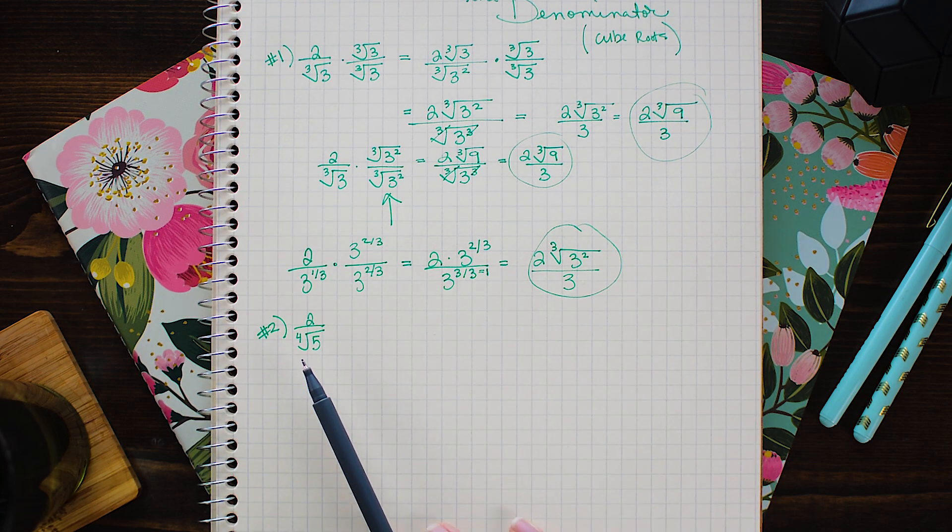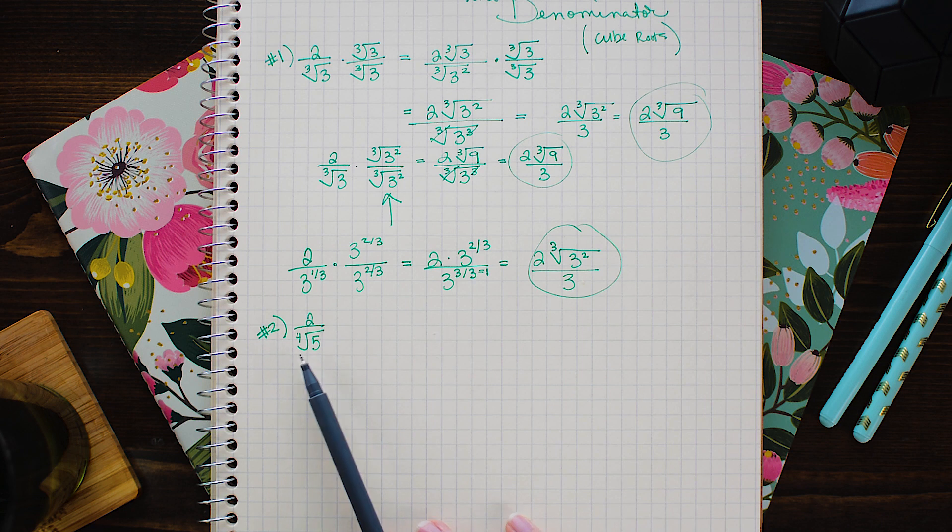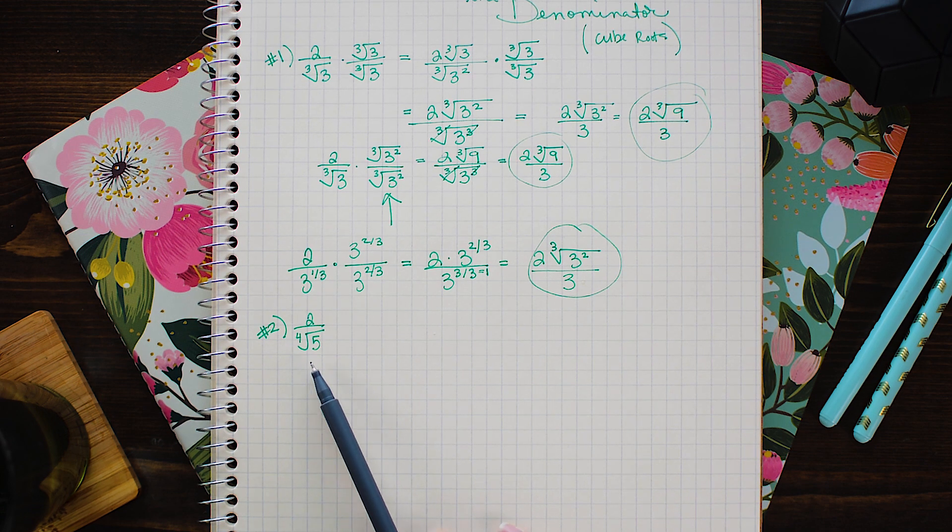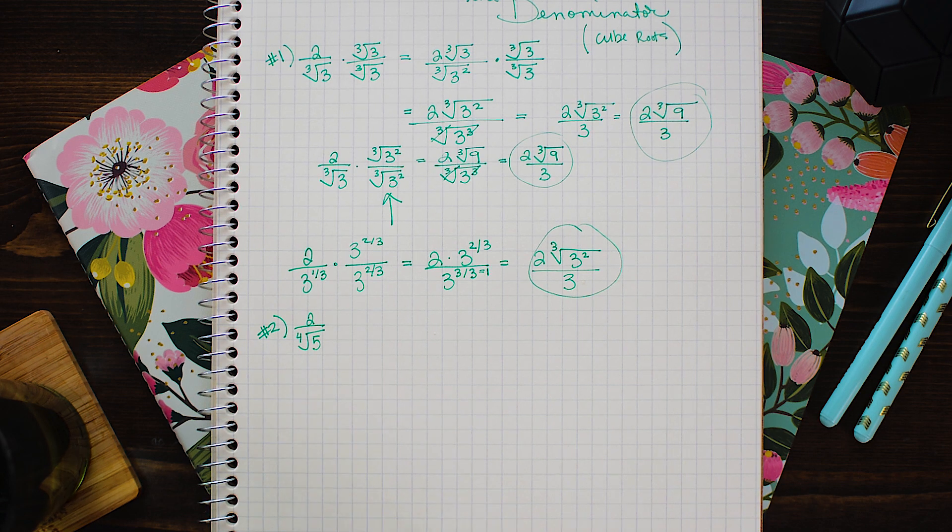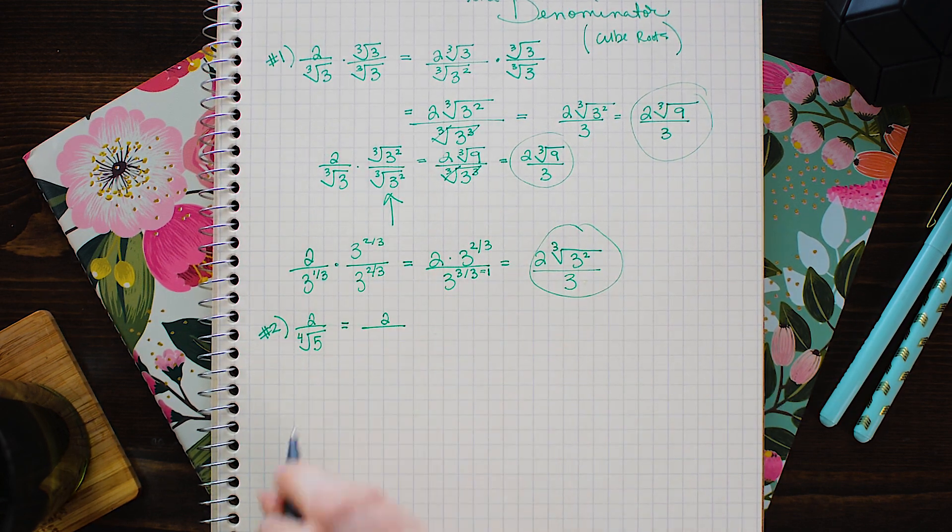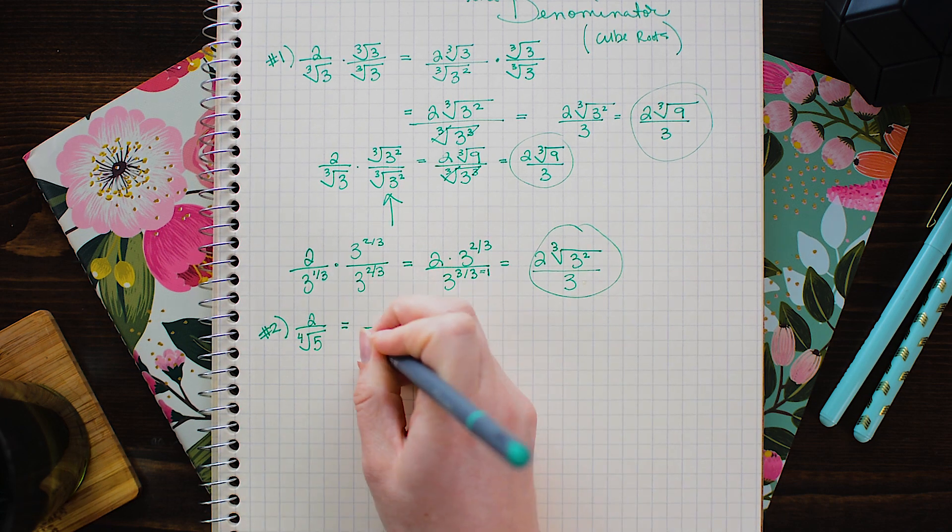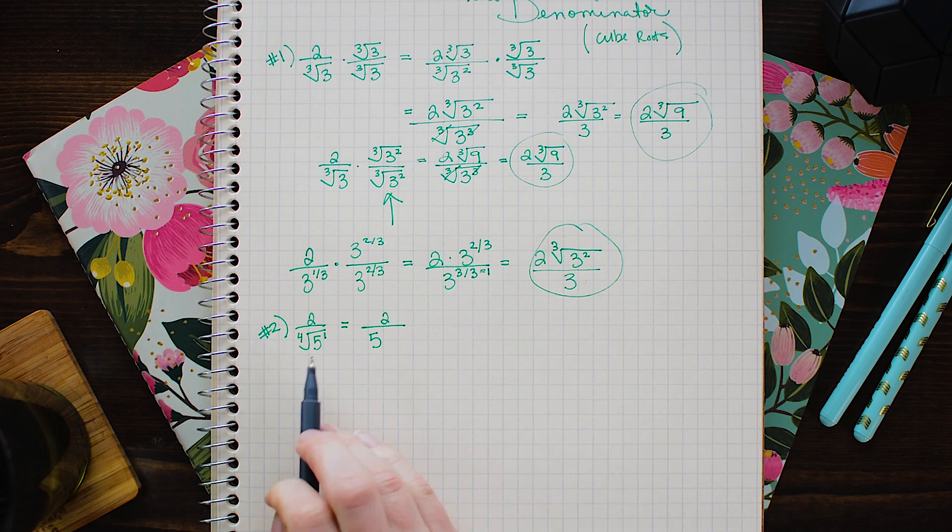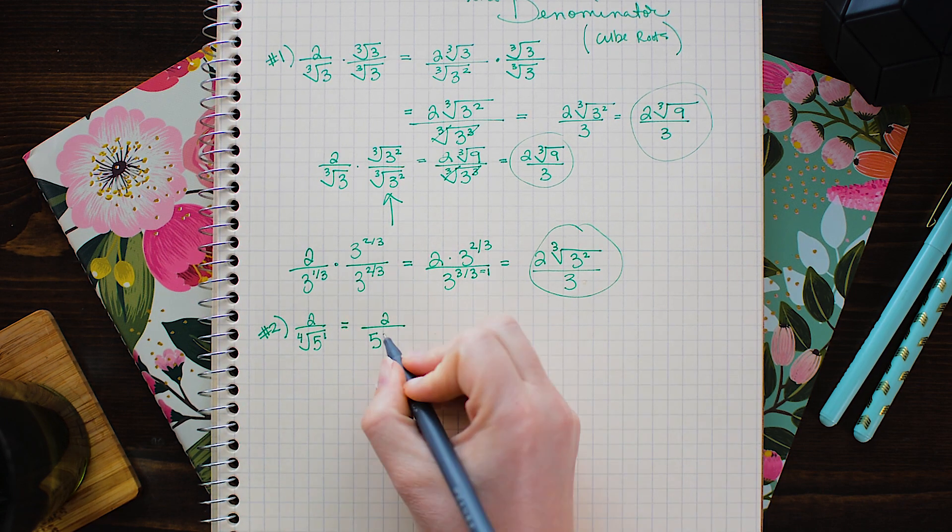Now when you're working in radical notation it may not be obvious how many 4th root 5's you need to multiply in order to get a whole number in the denominator. So instead let's go ahead and change it into fractional notation like we did in this last example. So this is the same as 2 over 5. And since there's no power on 5 I can think of this as a 1. So it is going to be 5 to the 1 4th power.